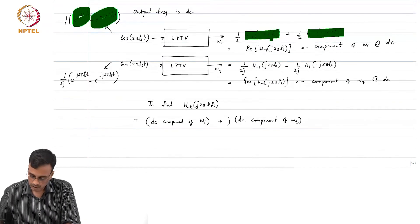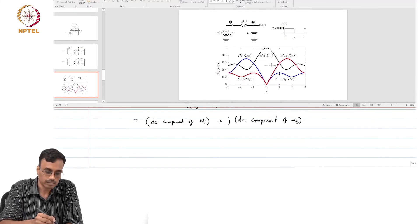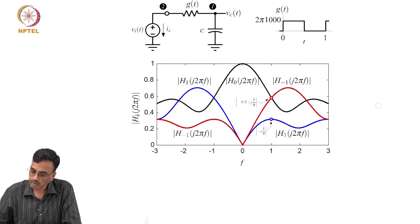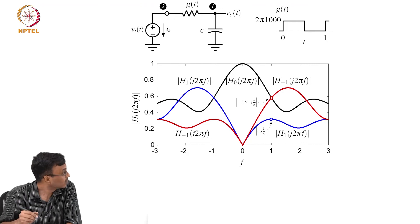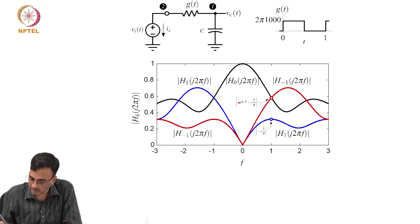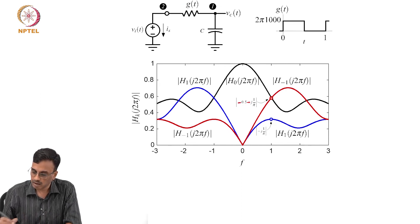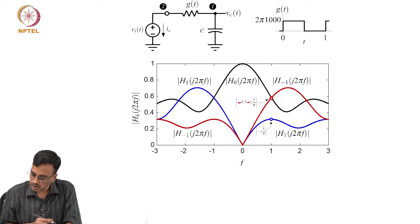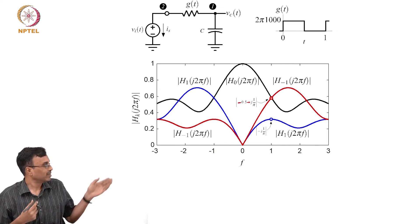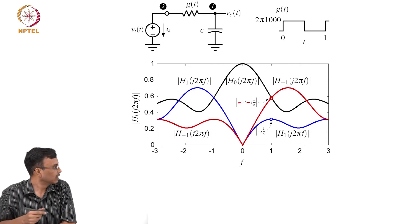Let us verify that this makes sense. H_{-1}(j2πf) was calculated as −1/2 + j/π, and that checks out. For H_{+1}(j2πf), you would actually have to do the full math and calculate it.